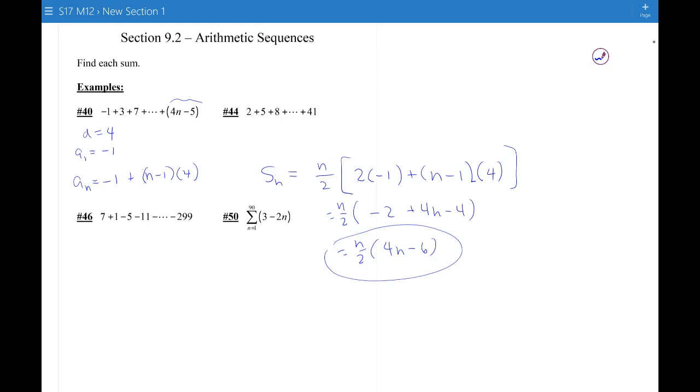So let's look at number 44. You can see that the jumps are 3. So d is 3 and a sub 1 is 2. But now we're going to have to figure out how many terms there are. So a sub n equals 41, but that equals a1 plus n minus 1 times this d.